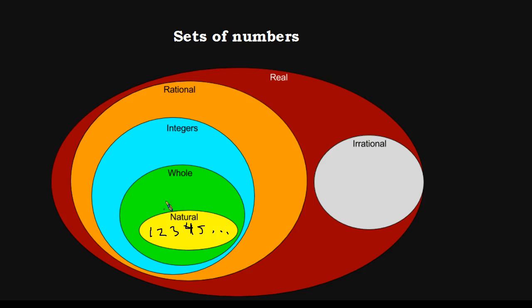Whole numbers are just like natural numbers, but we also include 0. So 0, 1, 2, 3, 4, 5, dot dot dot. That just means keep going, or et cetera, or so on and so on. So whole numbers are all of the natural numbers plus 0.